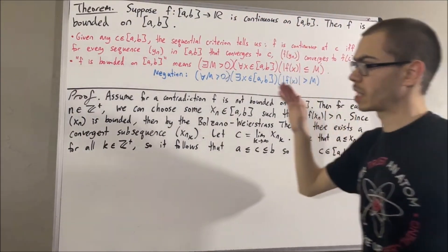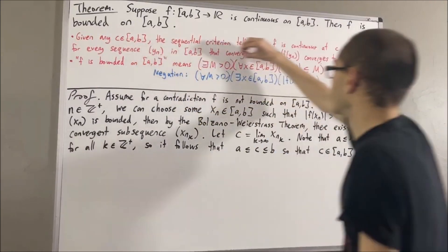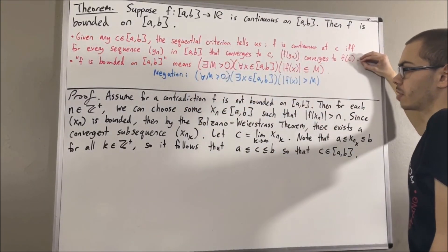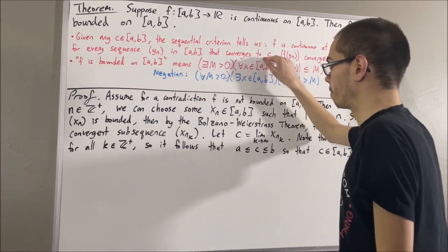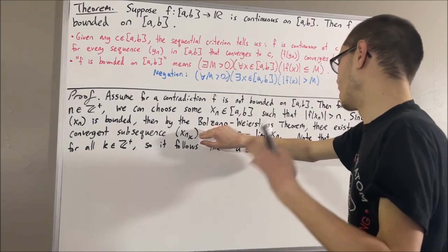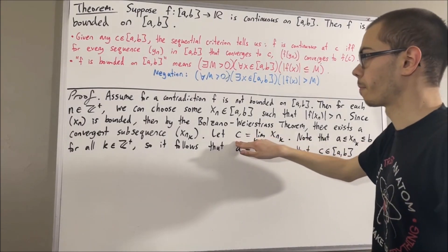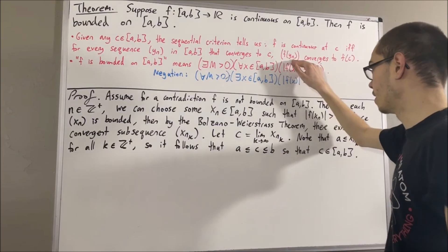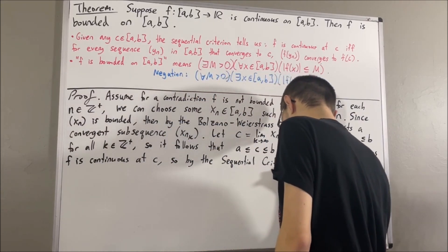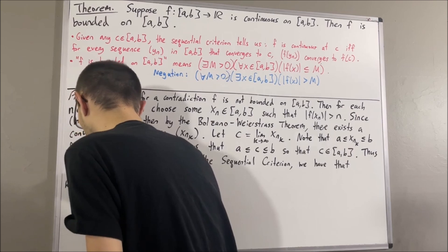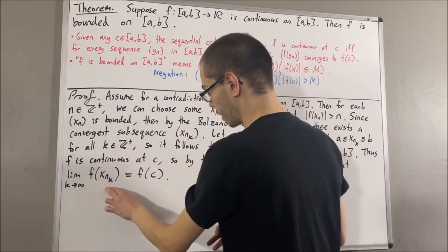So c is an element of the closed interval a, b. But f is continuous at every point in a, b, so in particular f is continuous at c. Since f is continuous at c, we can apply the sequential criterion. This statement works for every sequence of real numbers in the closed interval a, b that converges to c. Our subsequence is a sequence in a, b that converges to c. Therefore, the sequence f(xnk) converges to f(c). But every convergent sequence is bounded, so the sequence f(xnk) is bounded.